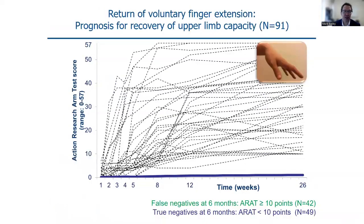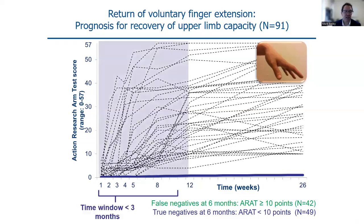Across the 91 people measured on the Action Research Arm Test, you can again see the pattern of some people rapidly getting better and others who did not do well. What they looked at was people who had return of voluntary finger extension. Many people with voluntary extension did well, while those without it did not. Most recovery occurred in the first 12 weeks, and most of the lines after this critical area are flat, suggesting that the window for recovery is largely within the first 12 weeks.